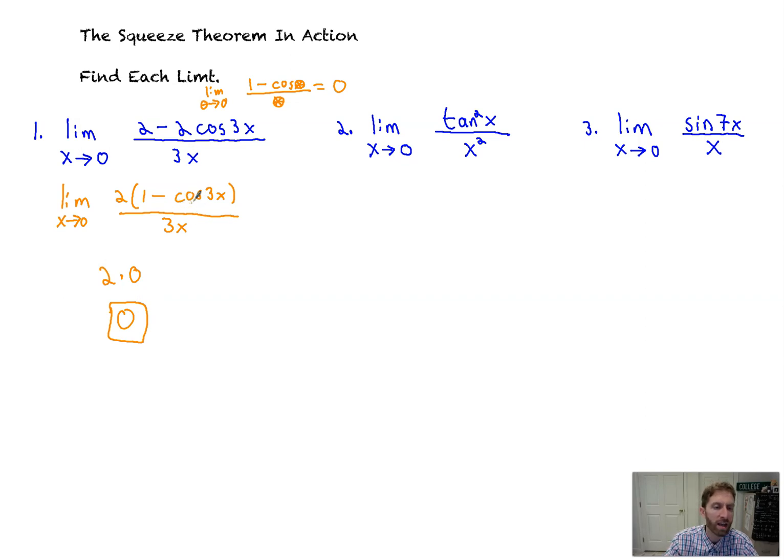But again, the important part is realizing that you've got to have the same angle as this value is in the denominator. So if this was just x and that was three x, it wouldn't necessarily equal to zero. You'd have to manipulate it to get it there. That's it.